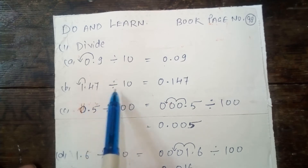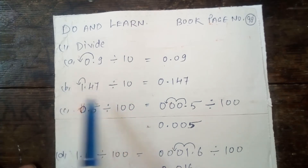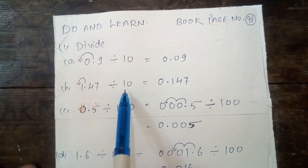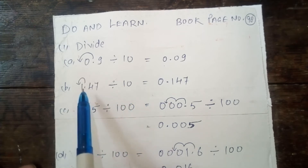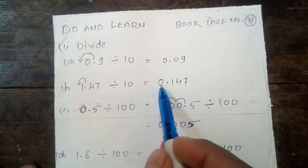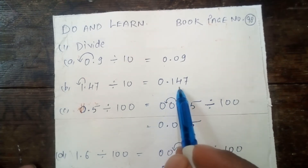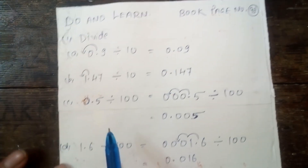Your next question is 1.47 divided by 10. We will apply the same procedure — move the decimal point one place to the left, according to the number of zeros in 10. In 10, the number of zeros is 1. So we move the decimal point one place to the left, and your answer will be 0.147.